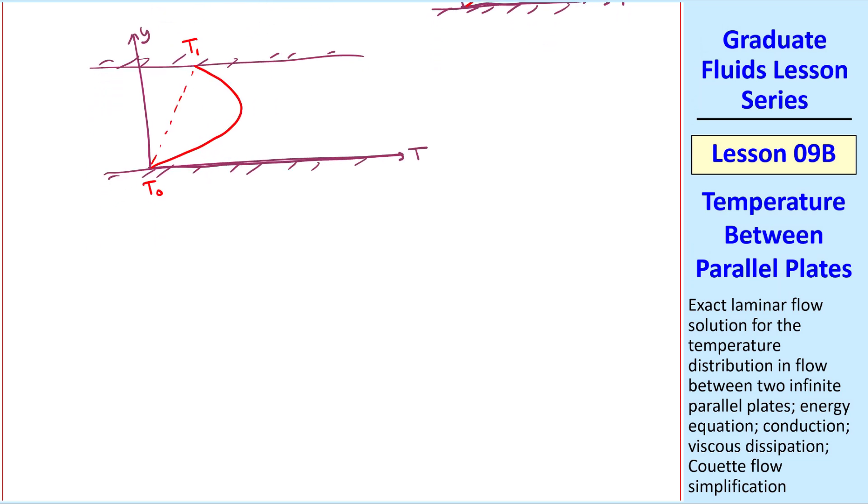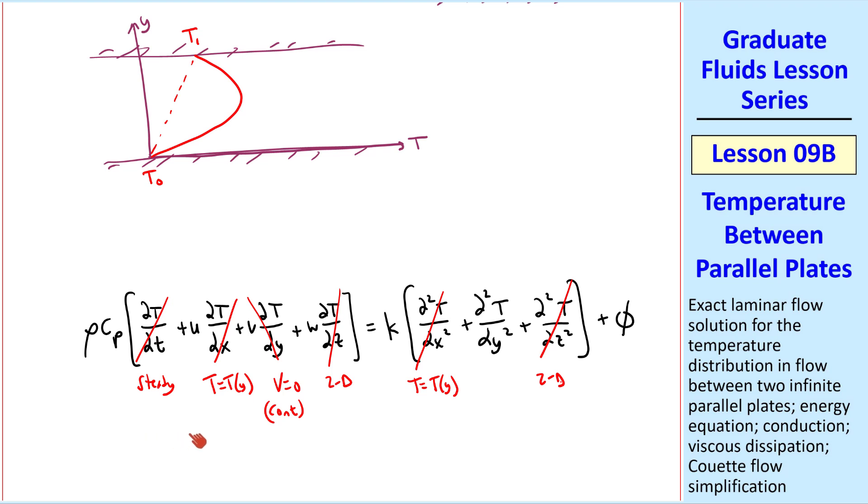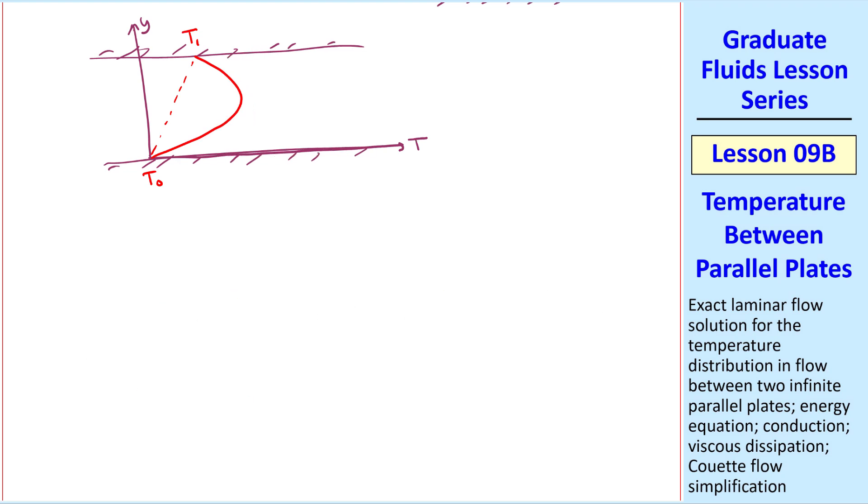As we saw with the velocity field, superposition works because all the nonlinear terms on the left side of the energy equation were zero, making the energy equation linear. I caution you that this does not always happen. Superposition works only when the equations are linear.